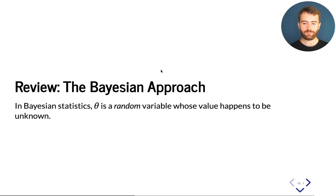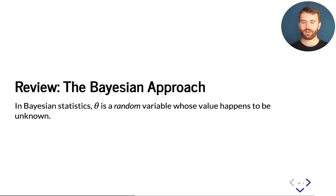Recall that the Bayesian approach to machine learning consists in treating the set of parameters theta as a random variable whose value happens to be unknown. This is in contrast to the frequentist approach where we have some true theta that we want to estimate. For example, if we're throwing coins, the coin has a true probability of landing heads or tails that we want to estimate. In the Bayesian approach, we define and work with a probability that the bias of the coin takes a certain value — that it's biased towards heads or tails by a certain amount.